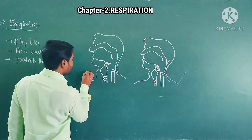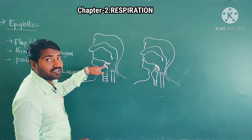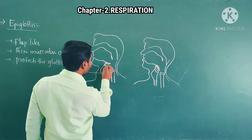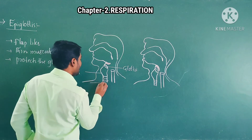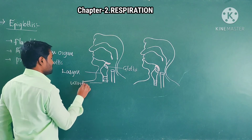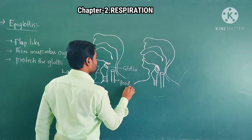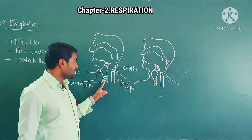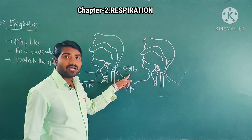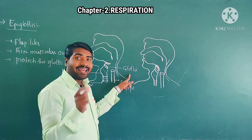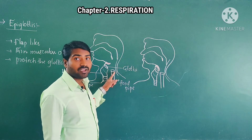The larynx is present here. The opening of the larynx is called the glottis. Here is the trachea — the wind pipe — and this is the larynx. The opening part of the larynx is called glottis.